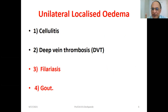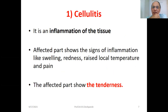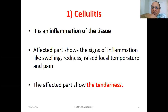For localized unilateral edema, there are four causes: cellulitis, deep vein thrombosis (DVT), filariasis, and gout. Cellulitis is inflammation of the tissue — the affected thigh or arm shows signs of inflammation: swelling, redness, raised local temperature, and pain. The affected part shows tenderness, called sparsha sahatwa in Ayurveda. When you try to touch that part, the patient will experience pain.